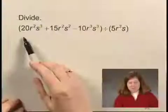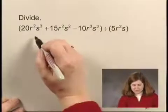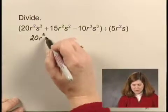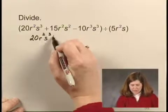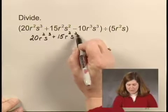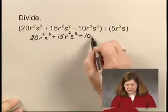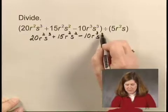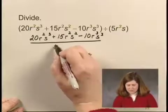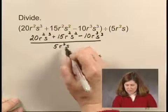In order to do this division, I'm going to write the polynomial 20r squared s cubed plus 15r squared s squared minus 10r cubed s cubed all over the divisor 5r squared s.